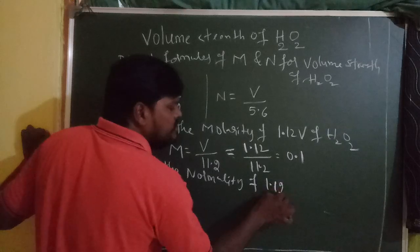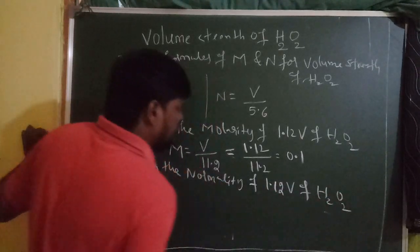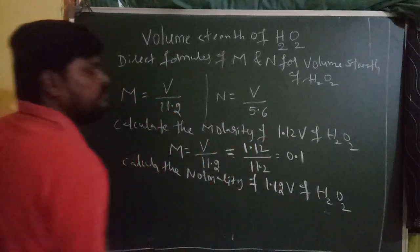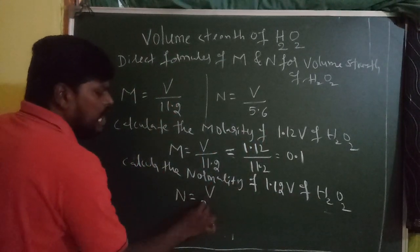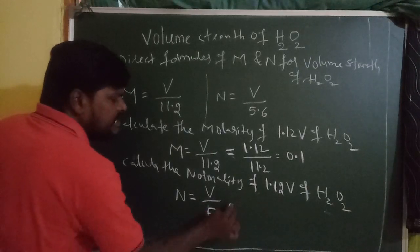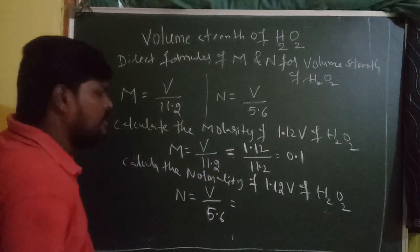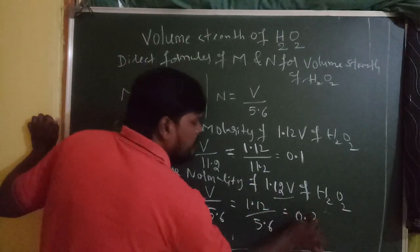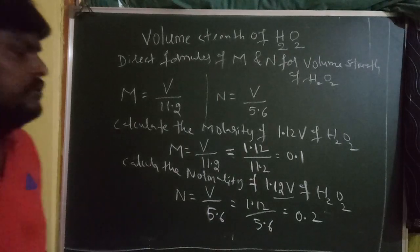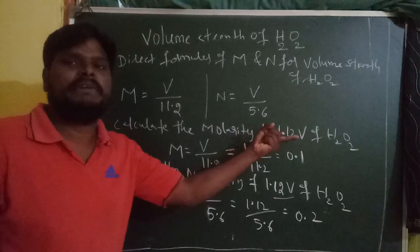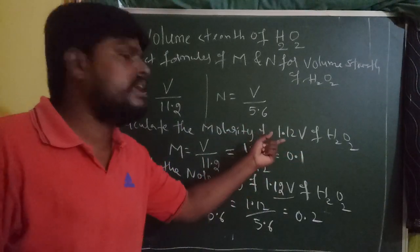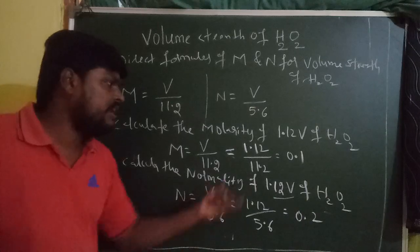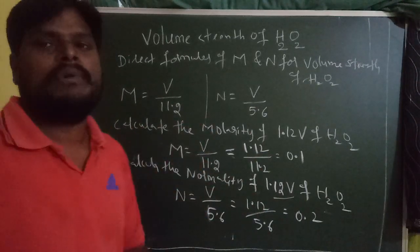Next problem: Calculate the normality of 1.12V H₂O₂. Using the formula: Normality = Volume Strength / 5.6. The volume strength is 1.12, so substitute: 1.12 / 5.6 = 0.2. So the normality of 1.12V H₂O₂ is 0.2 N. This is the way to find molarity and normality from the given volume strength of H₂O₂.